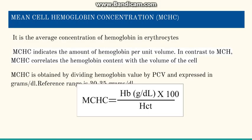Going to the next important RBC index, that is MCHC — mean cell hemoglobin concentration. It is the average concentration of hemoglobin in erythrocytes, not per single erythrocyte but per unit volume. MCHC denotes the amount of hemoglobin per unit volume of RBC. In contrast to MCH, MCHC correlates the hemoglobin content with the volume of the cell. The formula used is: we divide the hemoglobin by the hematocrit. The unit of MCHC is grams per deciliter.